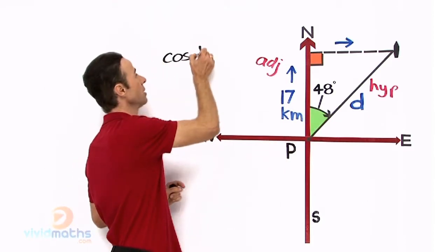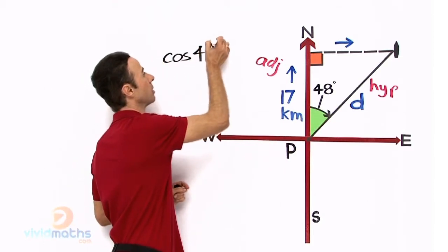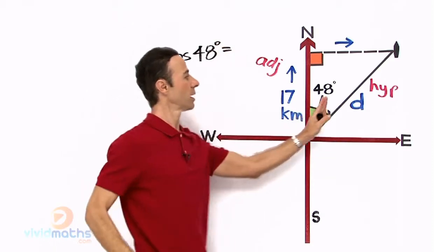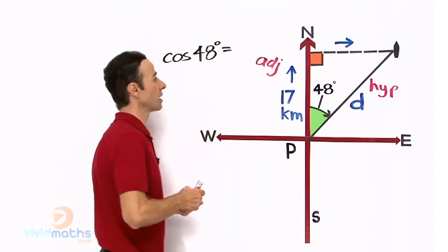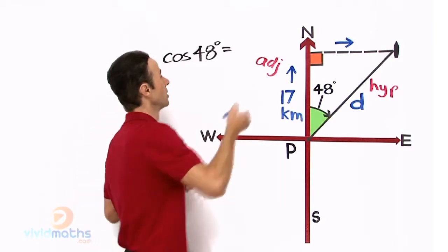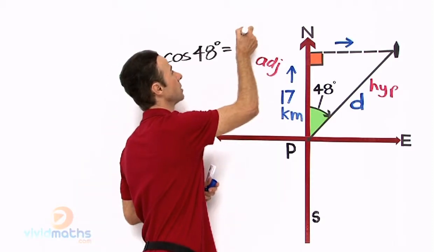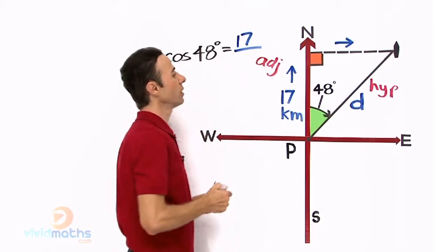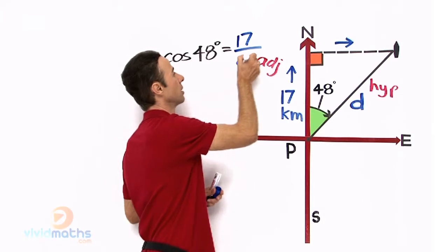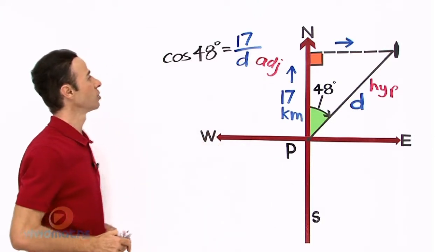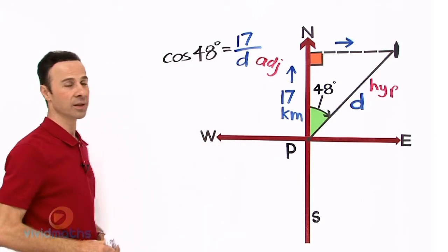Let's write that in. And that equals adjacent, which is how many kilometers north? 17. Let's write that in. 17 km all over. Now what we are looking for is the D across there, and that is the hypotenuse, so let's put that in. There is our D. Terrific.